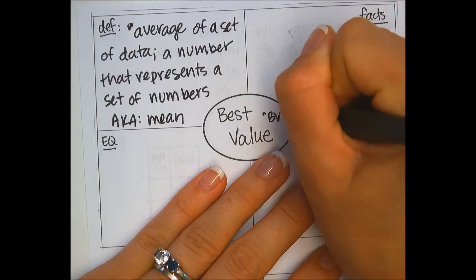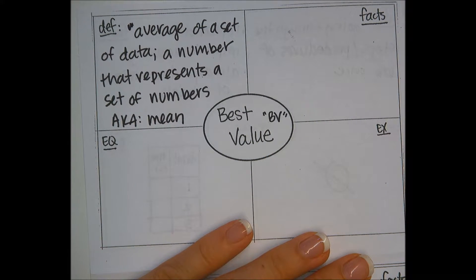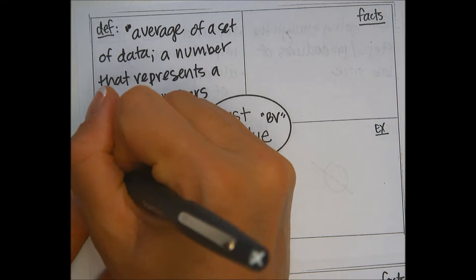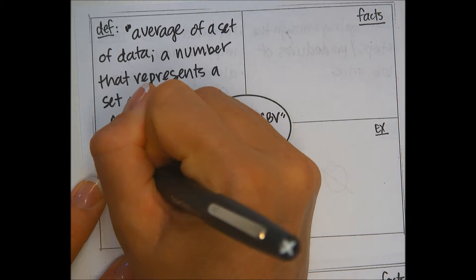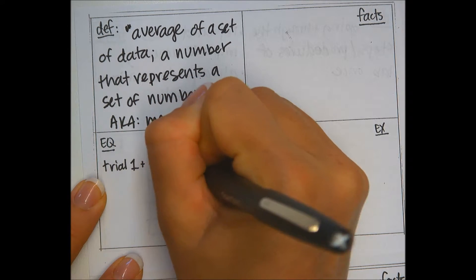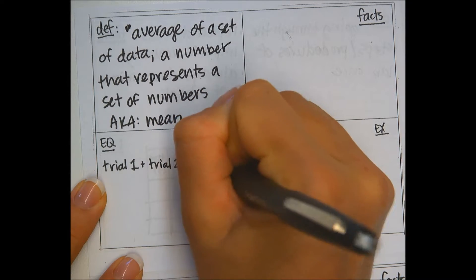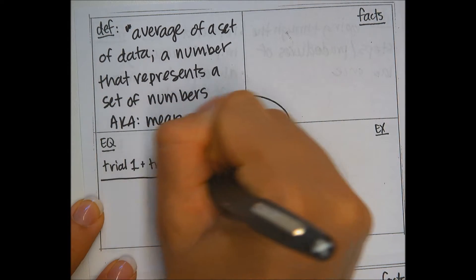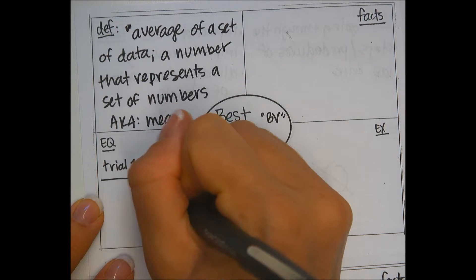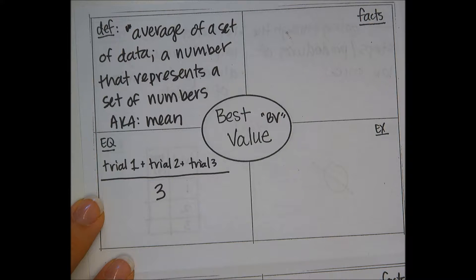Best value does have an equation — you've probably seen this before. You would add up all the numbers you have for an experiment. Let's say we have three trials: you'd add the data from trial one, trial two, and trial three, and then divide by the number of trials you have — so that would be three. If you have six trials, you'd add all six across the top and then divide by six.